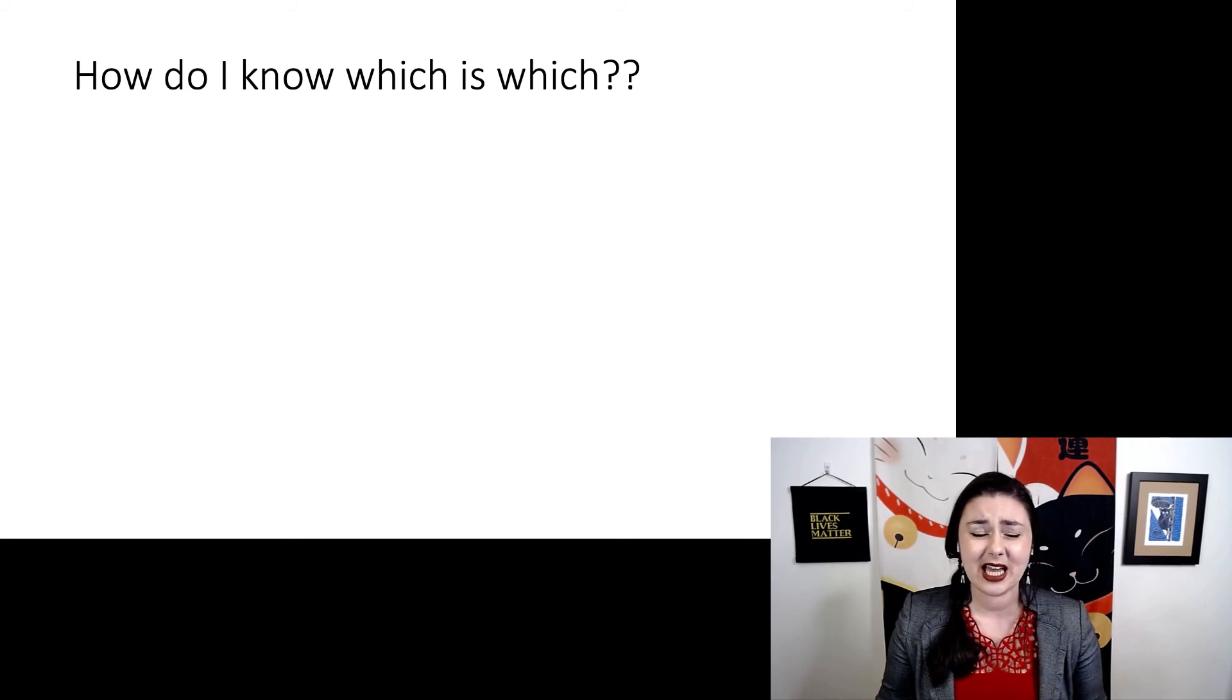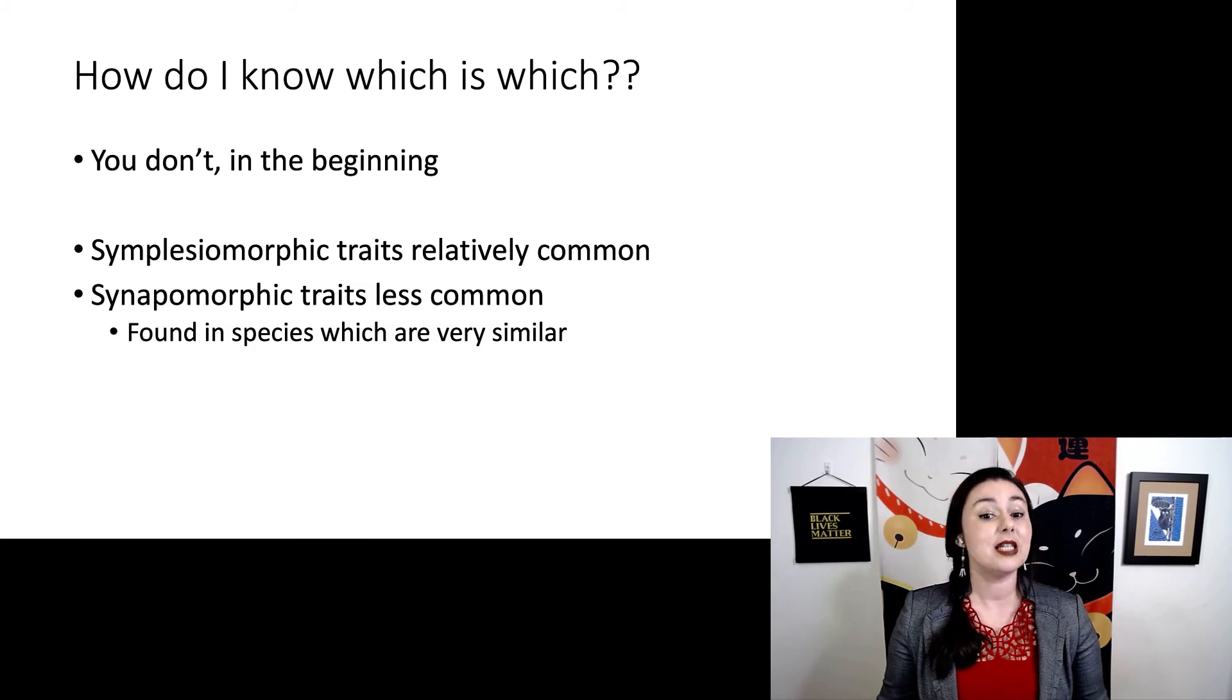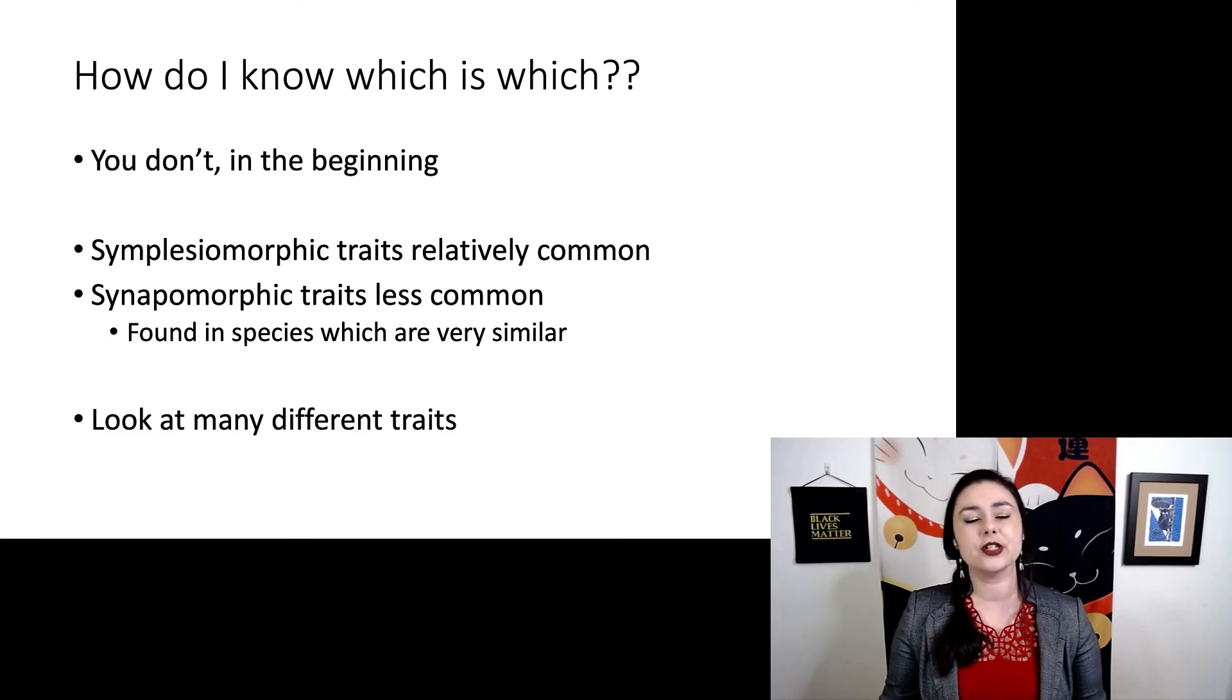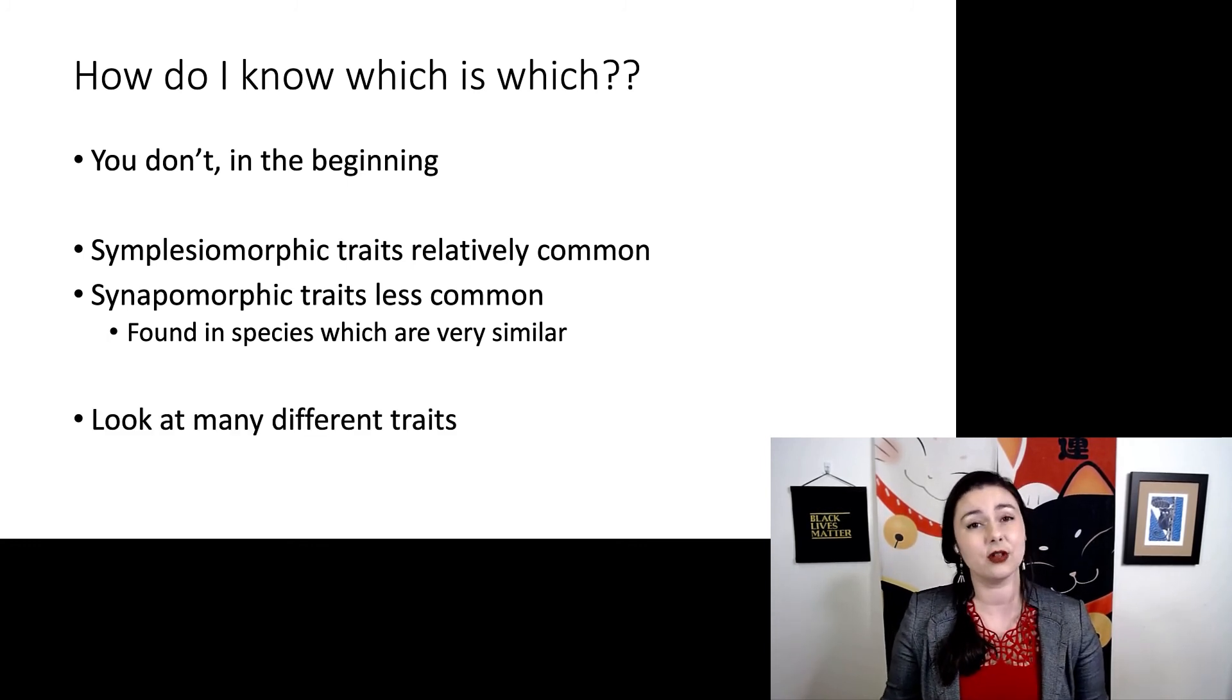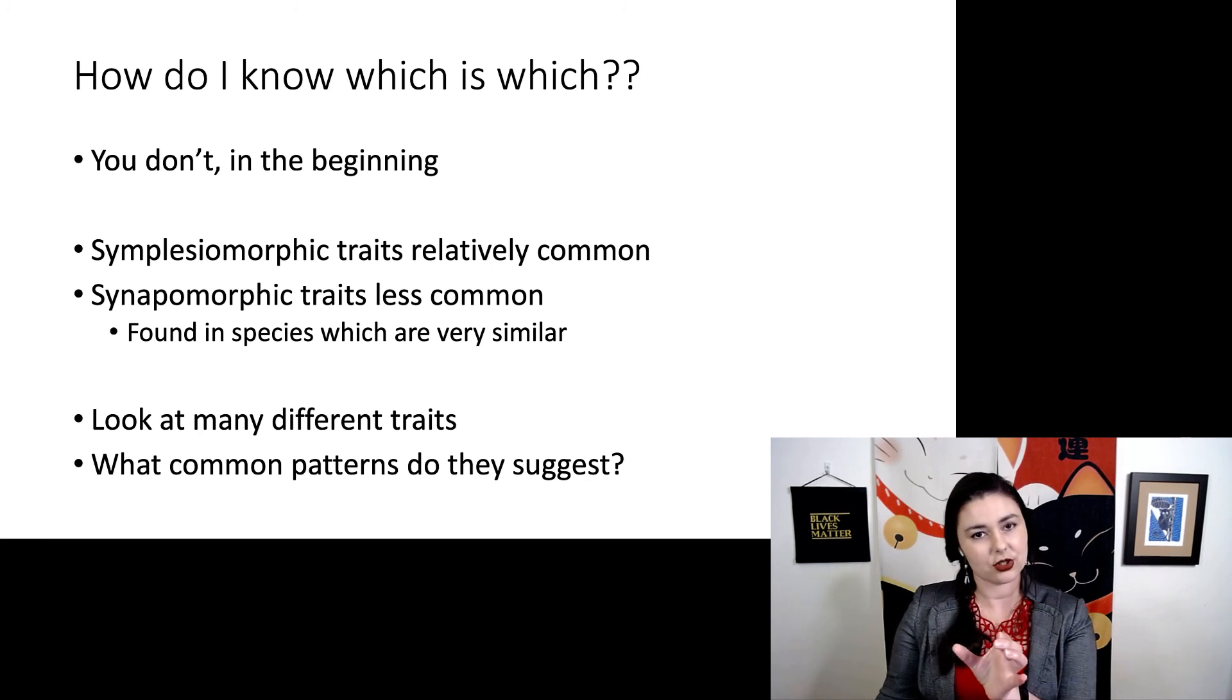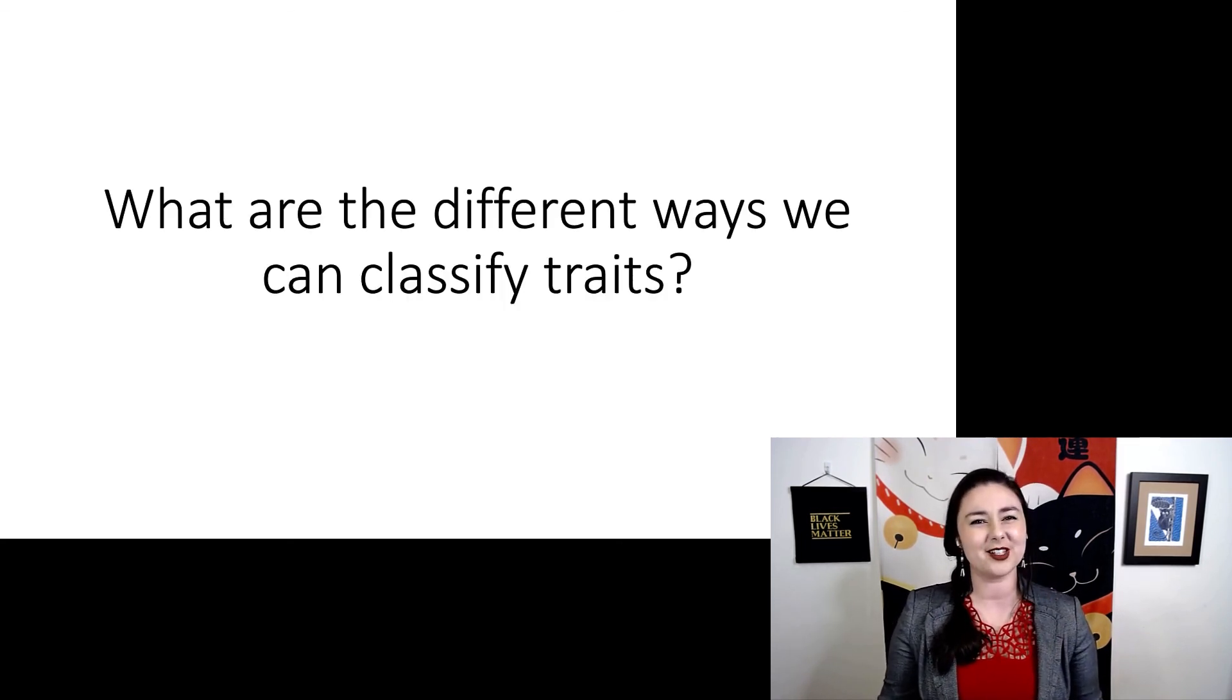But this, of course, leads to the question of, how do I know which is which? And in the beginning, you don't. You have to do further analysis and look at many different traits to figure out what's going on. In general, symplesiomorphic traits are relatively common. You should expect to find them in many different places. Synapomorphic traits should be relatively less common, because remember, they're new. And you should expect to find synapomorphies in species that are just overall very similar. The key here is when you're trying to figure out what's going on, you're going to have to look at a lot of different traits. And you want to figure out what are the common patterns. Do most traits suggest that these two species are closely related and like only a few suggest alternate relationships? Then those traits, then the few traits that are suggesting something else, those are probably homoplasies and everything else is probably a homology.